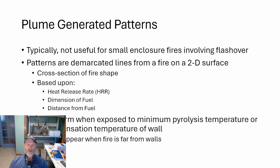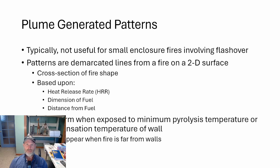Such demarcated patterns will have the cross-section of a fire shape that can be based upon heat release rate, dimension of fuel, and distance from fuel. Patterns form when exposed to the minimum pyrolysis temperature or soot condensation temperature of the wall. There are two forms of heat transfer applicable in this situation: one is convective and one is radiative.